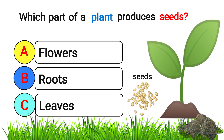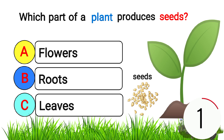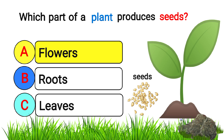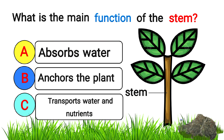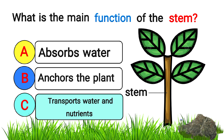Which part of a plant produces seeds? Answer: flowers. What is the main function of the stem? Answer: transports water and nutrients.